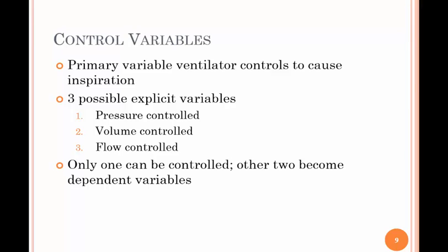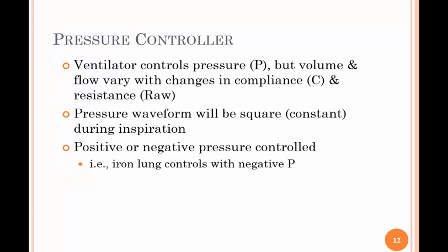Inside the control circuit we have control variables — the primary variable the ventilator controls to cause inspiration. There are three of them: pressure, volume, and flow. Only one of these can be controlled and the other two become dependent variables. The pressure controller means the ventilator controls the pressure, but volume and flow vary with changes in compliance and resistance.